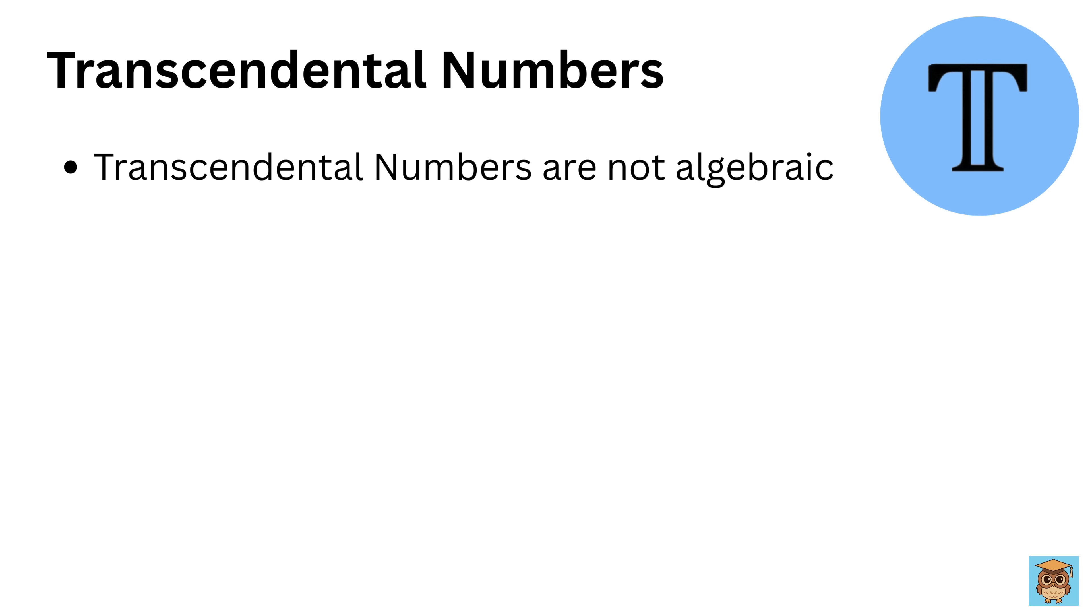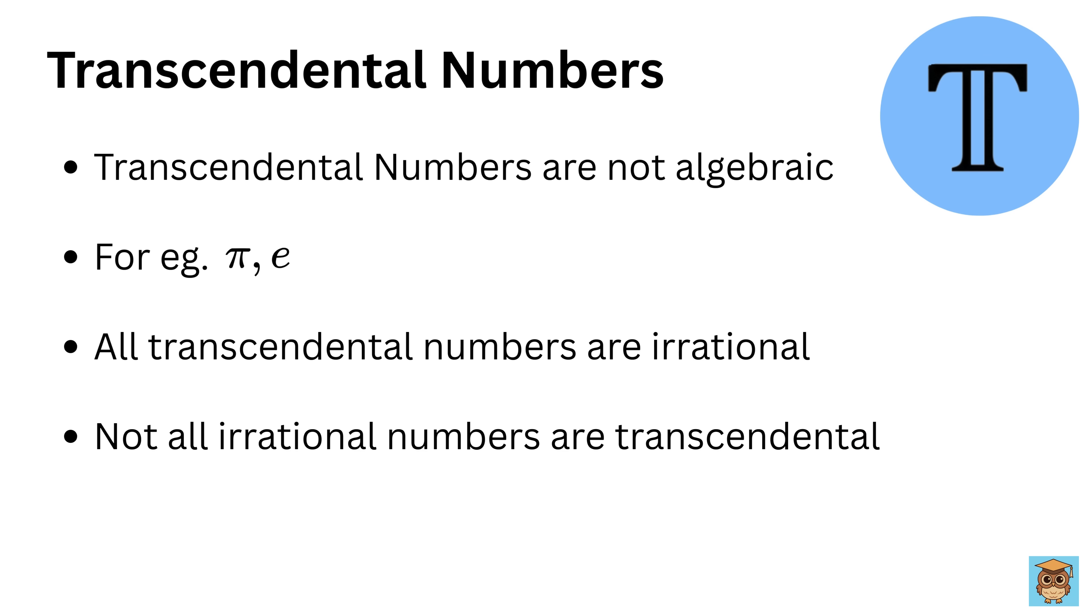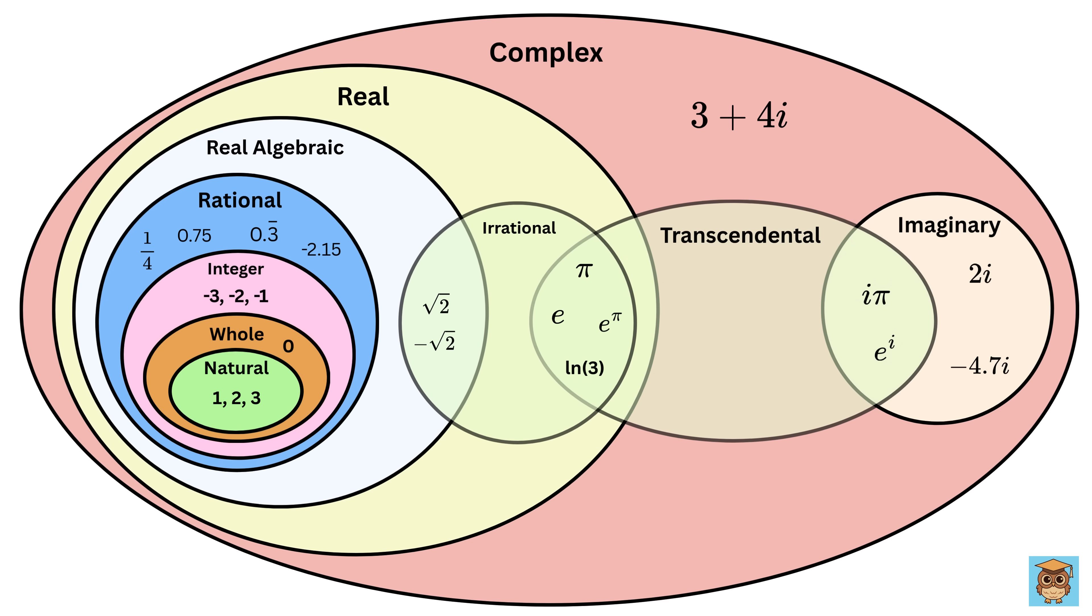Transcendental numbers are not algebraic. That means they are not solutions to any polynomial equation with rational coefficients. Famous examples include pi and the Euler number e. All transcendental numbers are irrational, but not all irrational numbers are transcendental. These numbers are relatively rare, but play important roles in mathematics.